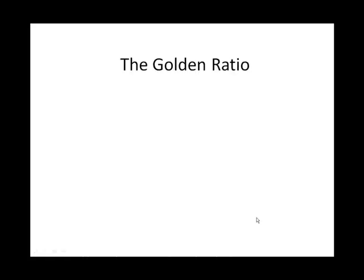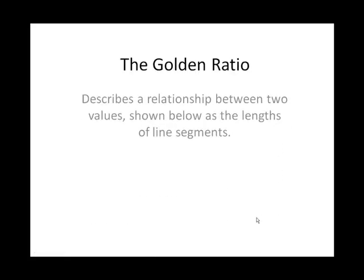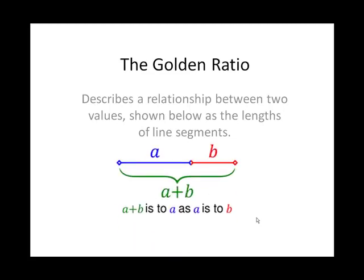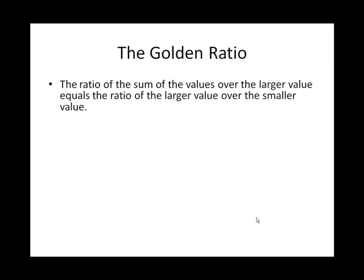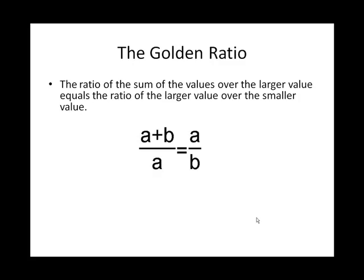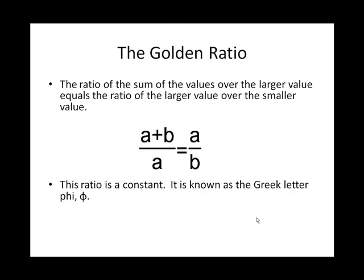The Golden Ratio describes a relationship between two values, shown as the lengths of line segments. A plus B is to A as A is to B — this is the golden section. The ratio of the sum of values over the larger value equals the ratio of the larger value over the smaller value.